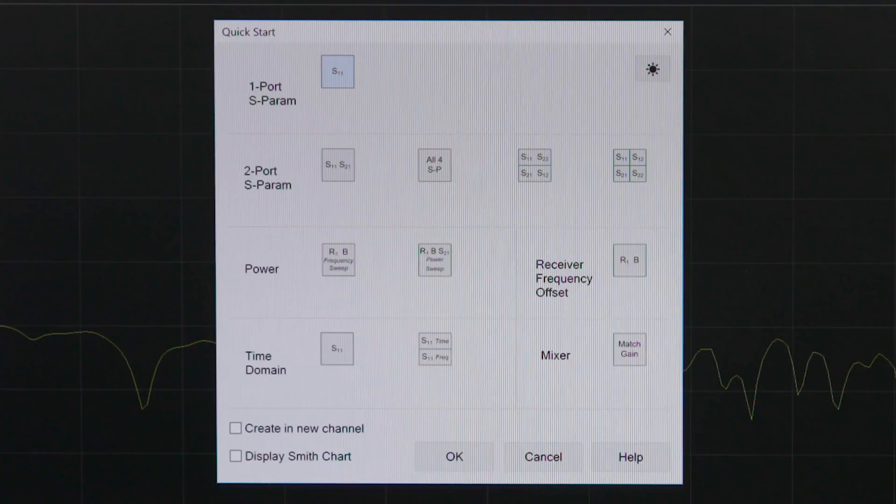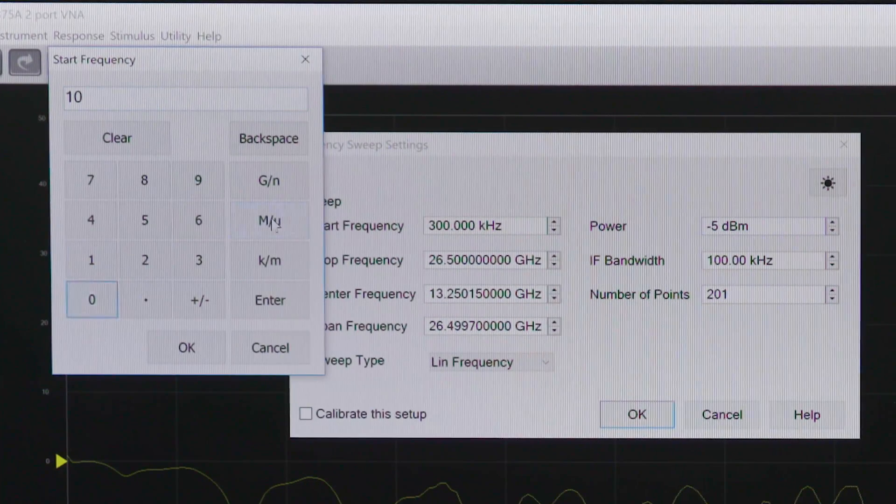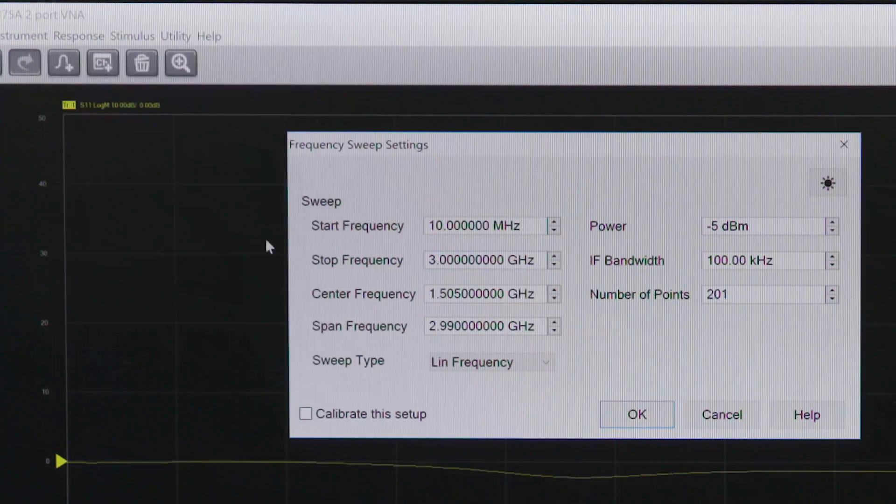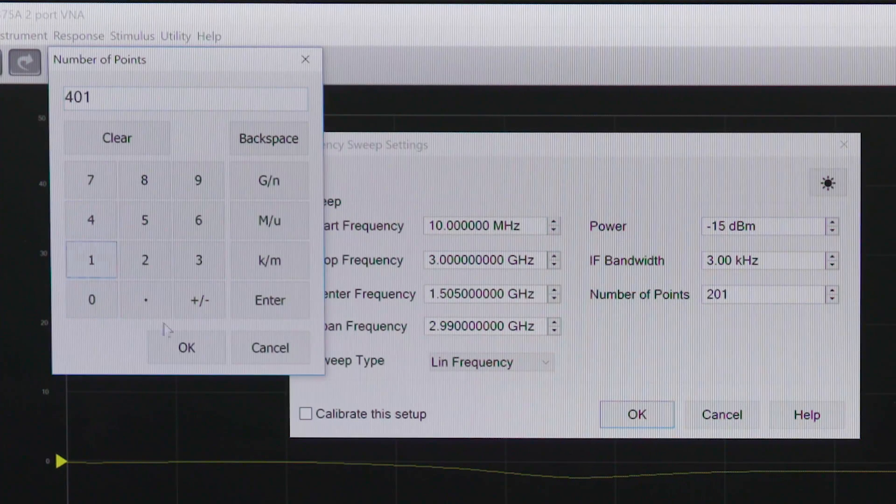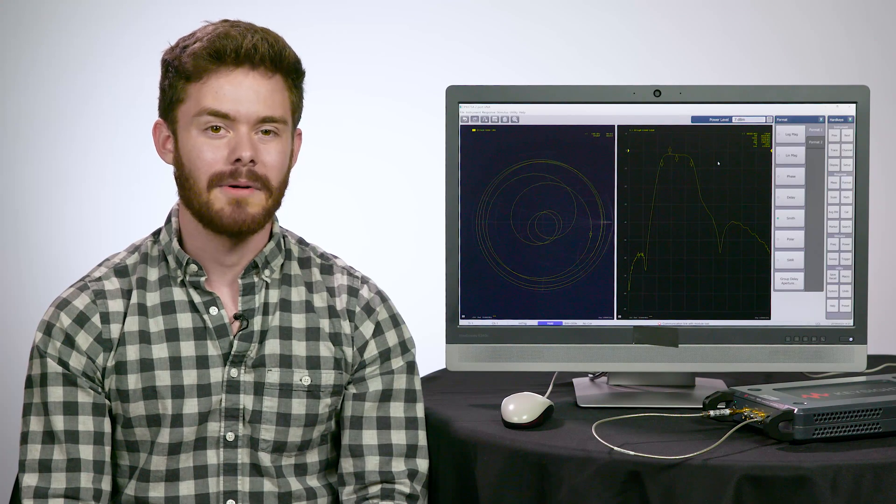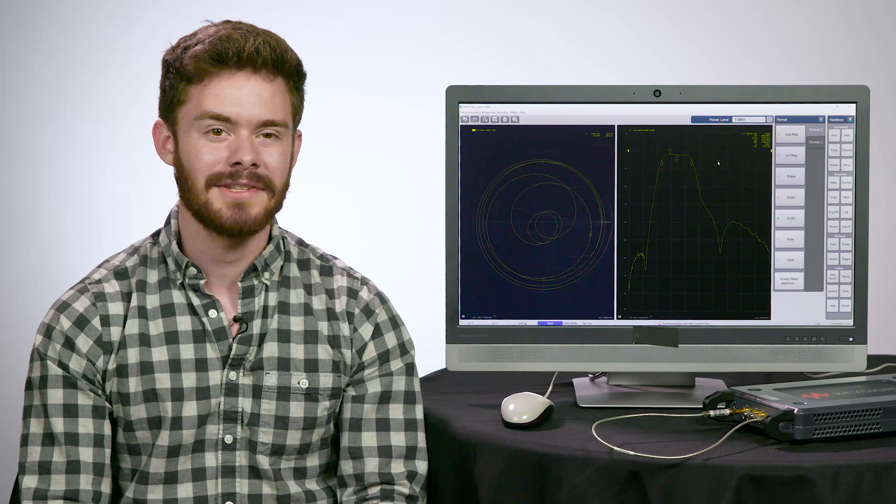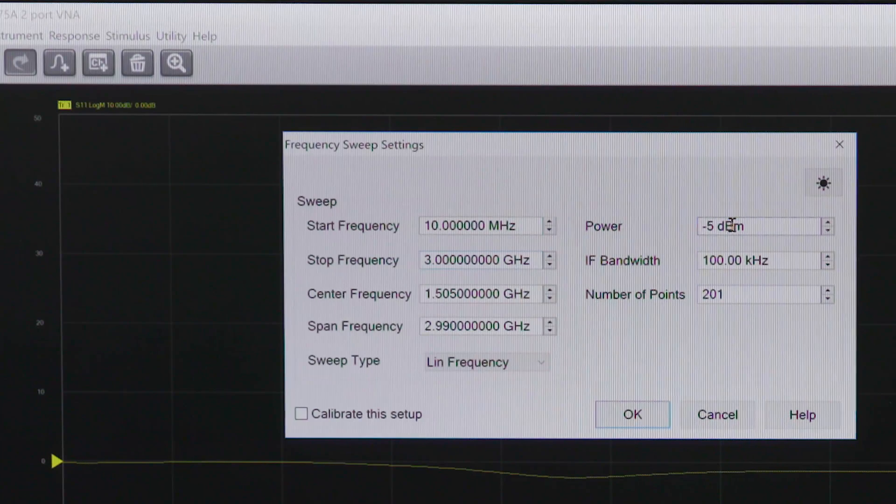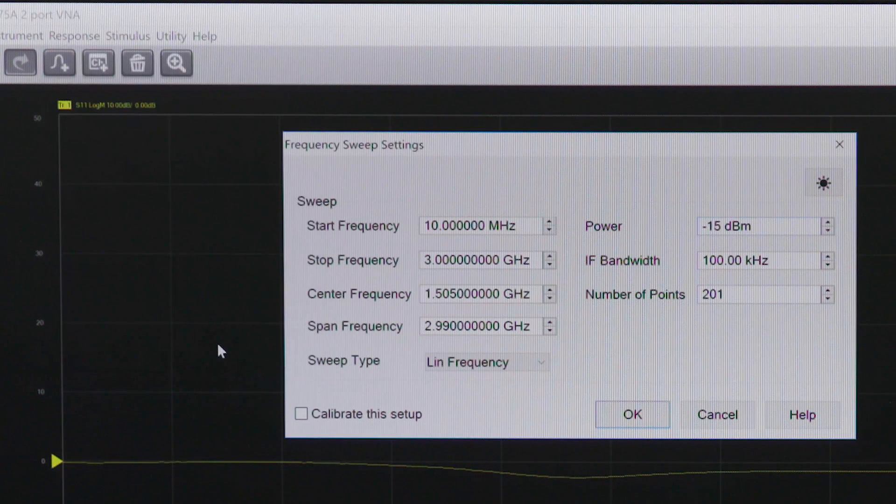Since we are only working with one port here, I'll select the one port S parameter option. This is where you will need to enter your start and stop frequencies, sweep type, power level, and the other parameters for your test. It's important to remember here that this new USB VNA's source power must be set correctly in order to avoid damage or compression inside the ECOW module. The power for this should be set to minus 15 dBm for the calibration operation.